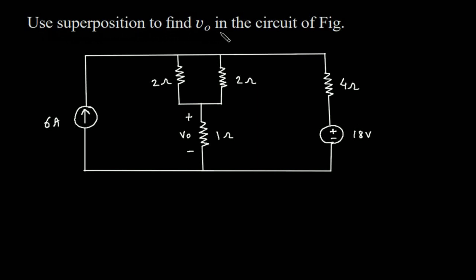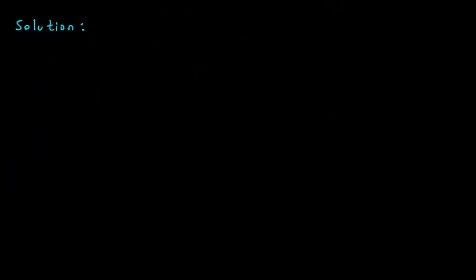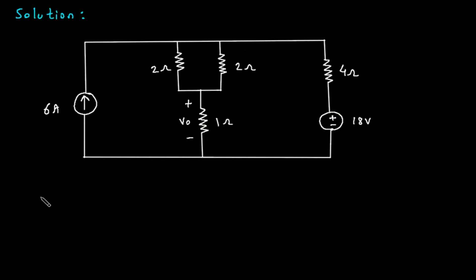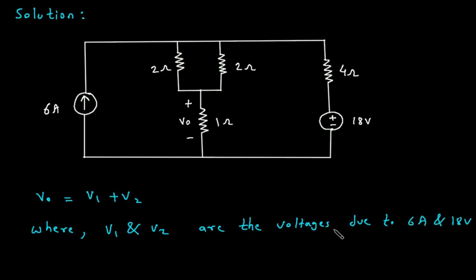We have to find Vo in this circuit using the superposition theorem. First, we will redraw the circuit. Vo is equal to V1 plus V2, where V1 and V2 are the voltages due to the 6 ampere and 18 volt sources respectively.